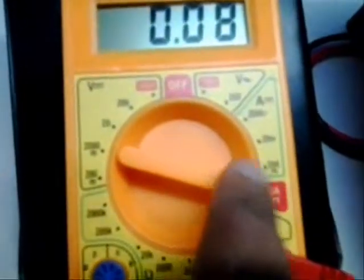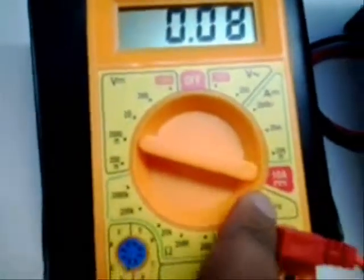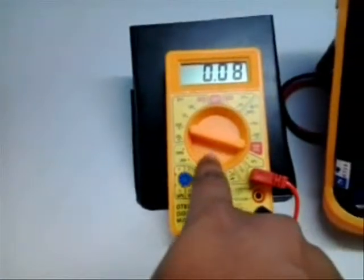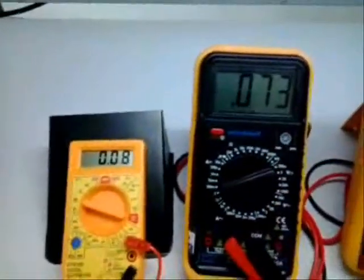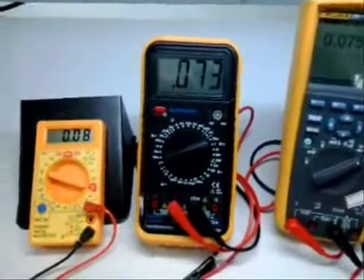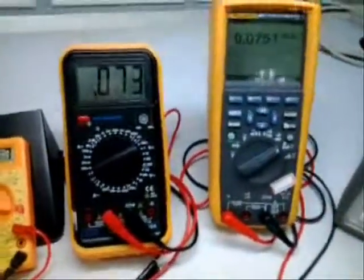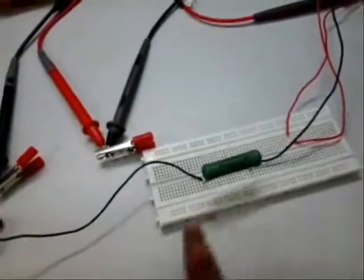So we have put this in 10A mode because the other modes didn't work for us. Here also it shows it is fluctuating between 70 and 80. This is 73. The expected current was 100mA. Now why is this happening?